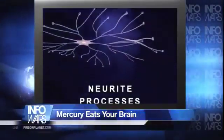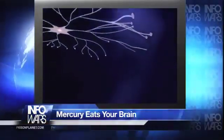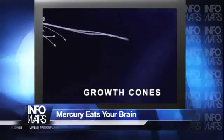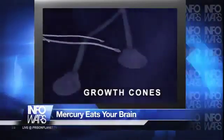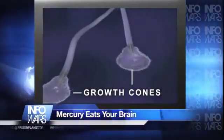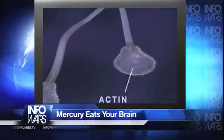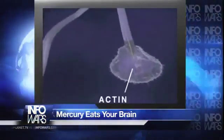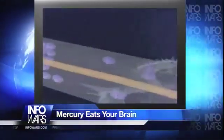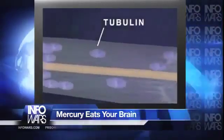At the end of each neurite is a growth cone, where structural proteins are assembled to form the cell membrane. Two principal proteins involved in growth cone function are actin, which is responsible for the pulsating motion seen here, and tubulin, a major structural component of the neurite membrane.